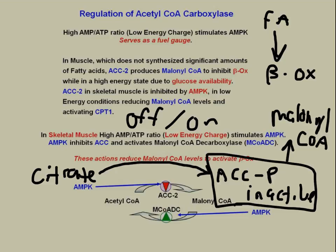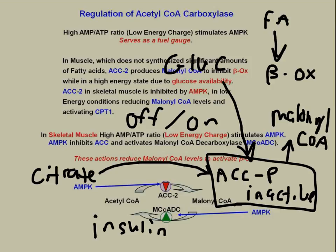Glucagon would phosphorylate ACC while insulin would dephosphorylate it. So in the liver and adipose tissue, insulin would increase fatty acid synthesis and decrease beta-oxidation. Whereas in the muscle, you'll get malonyl-CoA formed, which will decrease beta-oxidation, but it won't actually drive fatty acid synthesis.